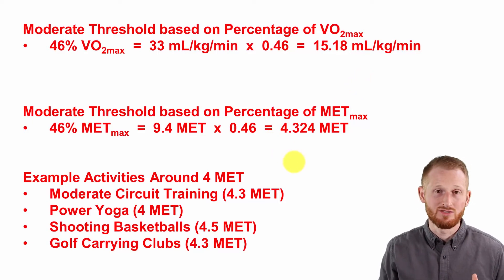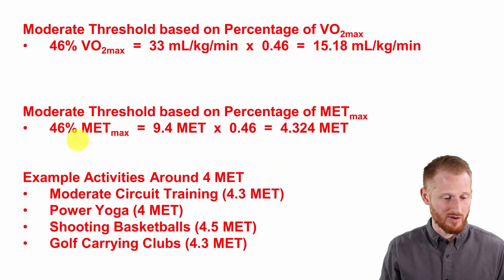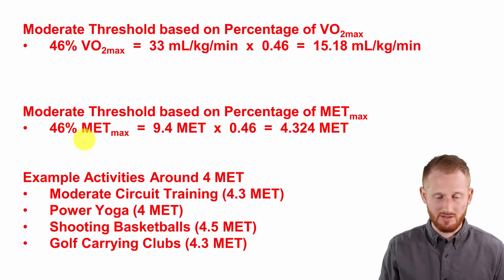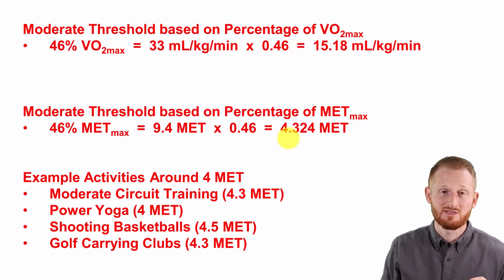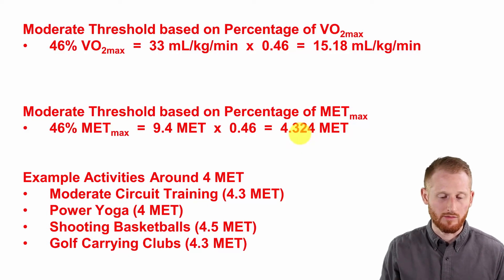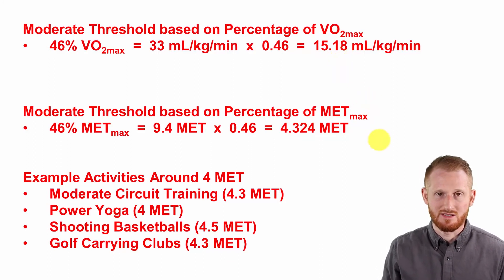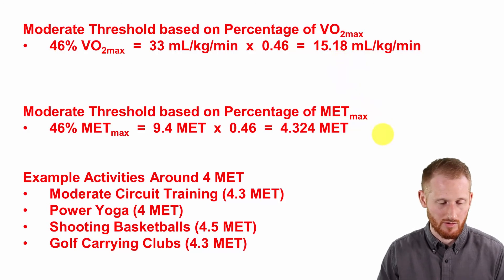In order to do a similar calculation for METs, we can do again 46 percent of MET max would be considered the minimal threshold to reach moderate intensity exercise. Her MET max was 9.4 METs, so multiply that by the 0.46, which is the decimal 46 percent. That gives us 4.324 METs. Now we would round this probably to around 4.3 and we'd round this value here to probably 15, just to give us nice round, easy, small numbers to work with.